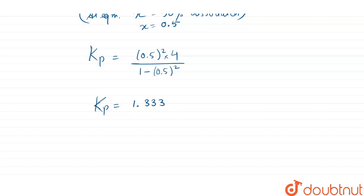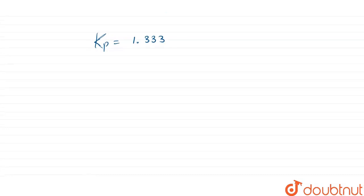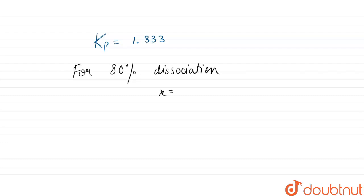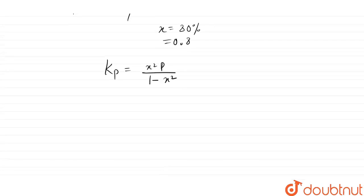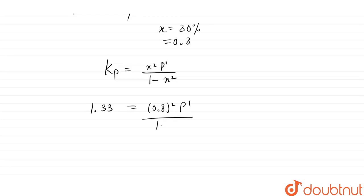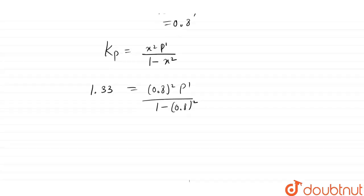Now we have to calculate for 80 percent dissociation, so x = 0.8. Using the same Kp expression: Kp = x²P' / (1 - x²). Let the new pressure be P'. We have 1.333 = (0.8² × P') / (1 - 0.8²). Solving for P'.